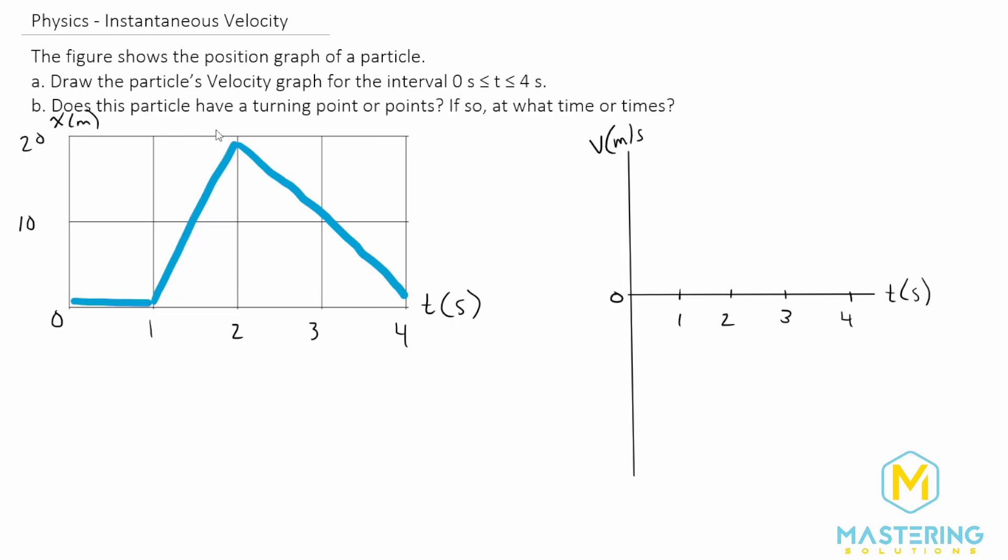And so to do the velocity graph, we need to figure out the velocity for each of these sections here. So we have one, two, and three sections where the velocity is the same for that section of time. So the first one, there's just a flat line. And we know that whenever there's a flat line, that means that there is no slope. And in here, we're taking the slope to find the velocity. So for zero to one seconds, we have no velocity.